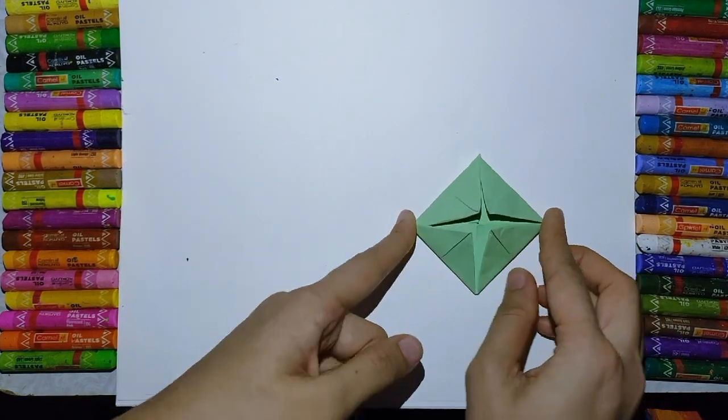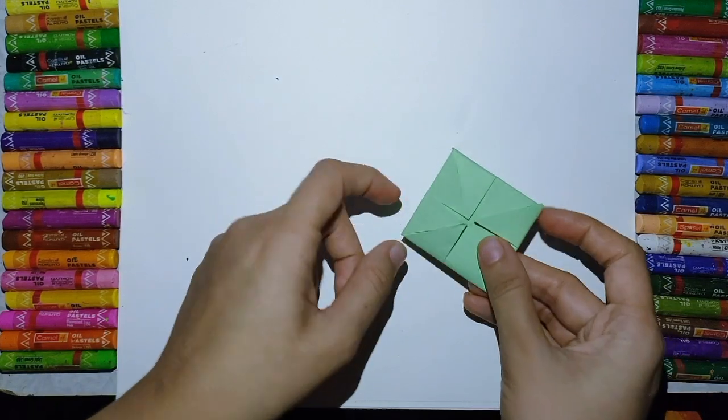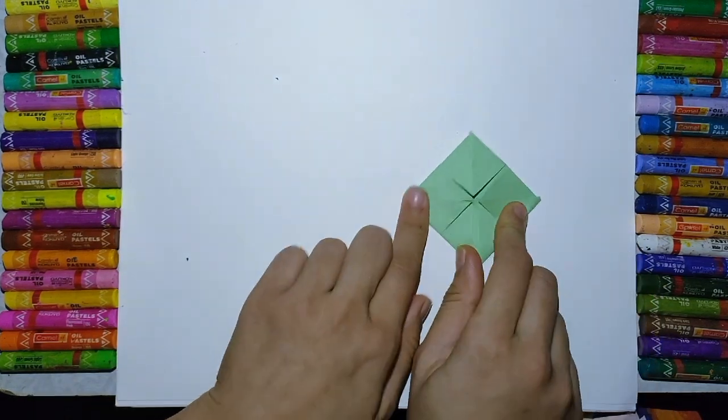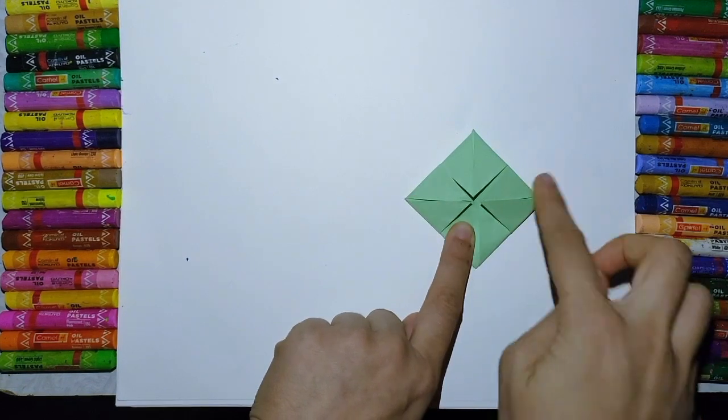Clear everyone? One, two, three, four. Now again turn the paper. So you will get one, two, three, four corners.